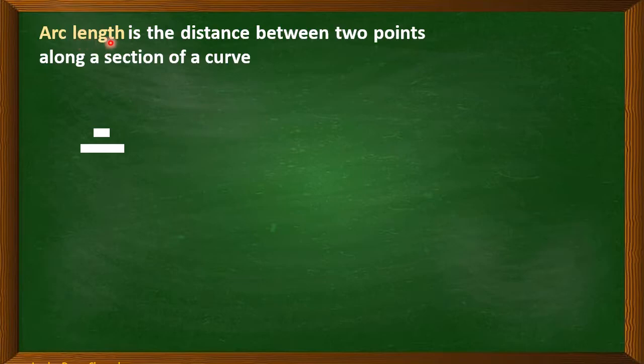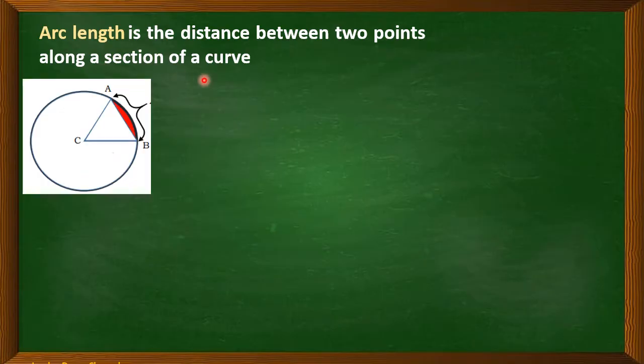Arc length is the distance between two points along a section of a curve. So if we have here a circle, circle C, we have here arc, arc A, B.